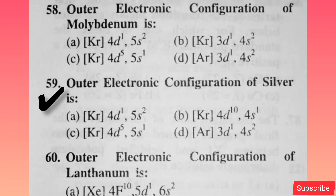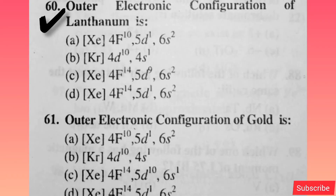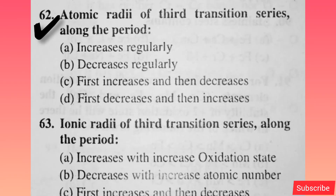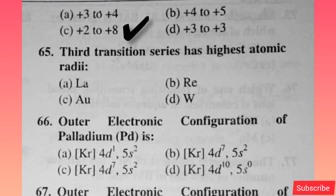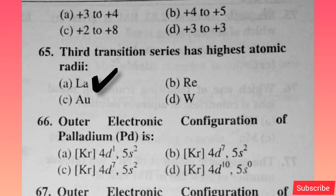Outer electronic configuration of silver is — option B is correct. Outer electronic configuration of lanthanum is — option D is correct. Outer electronic configuration of gold is — option C is correct. Atomic radii of the third transition series along the period — option D is correct. Ionic radii of the third transition series along the period — option B is correct. The second transition series elements have variable oxidation states — option C is correct. The third transition series has the highest atomic radius — option A is correct.